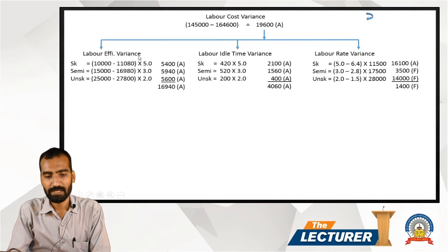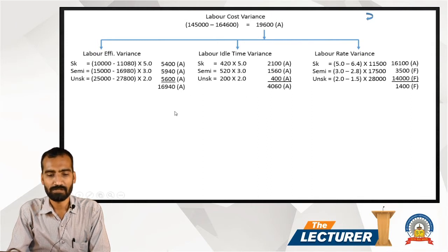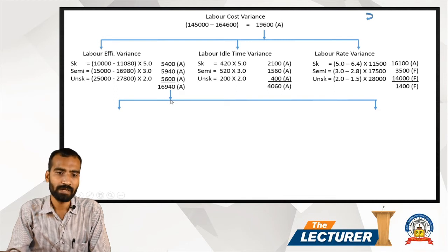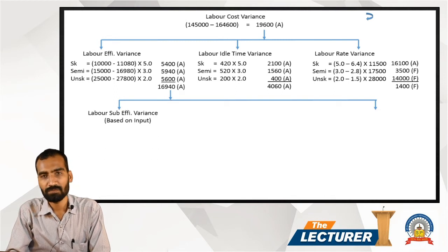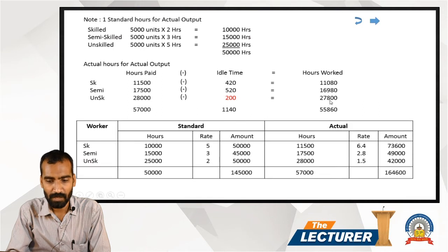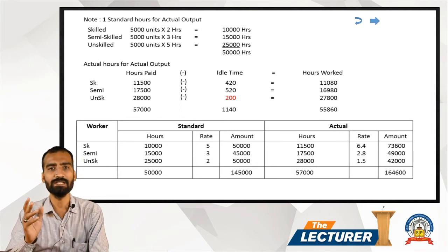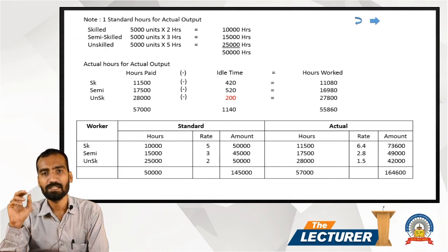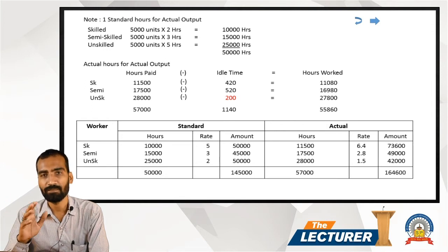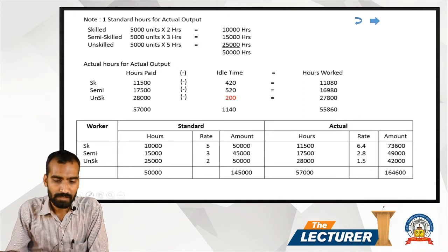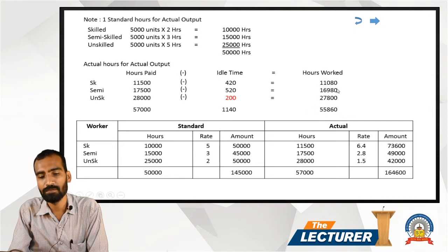The Efficiency Variance can be further bifurcated into two parts: Labor Sub-Efficiency Variance (based on input) and Labor Yield Variance (based on output). For the overall efficiency variance, total standard hours are 50,000 and total actual hours worked are 55,860.